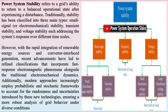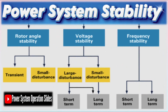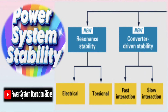The dynamics of power systems operate across various timescales. The timescale associated with the controls of converter interface generation (CIG) technology spans from microseconds to milliseconds, encompassing wave and electromagnetic effects. With the increasing adoption of CIGs, faster dynamics are becoming crucial for analyzing the behavior of future power systems, surpassing slower phenomena that occur over milliseconds to minutes.